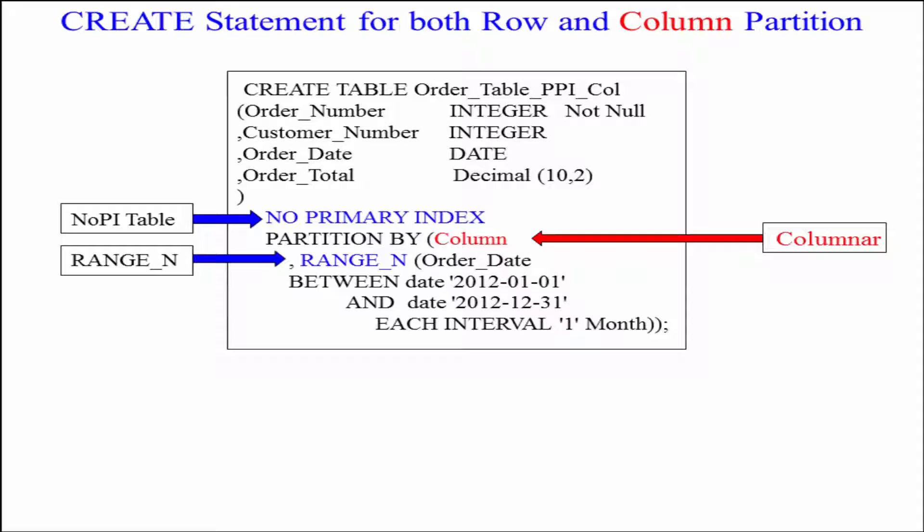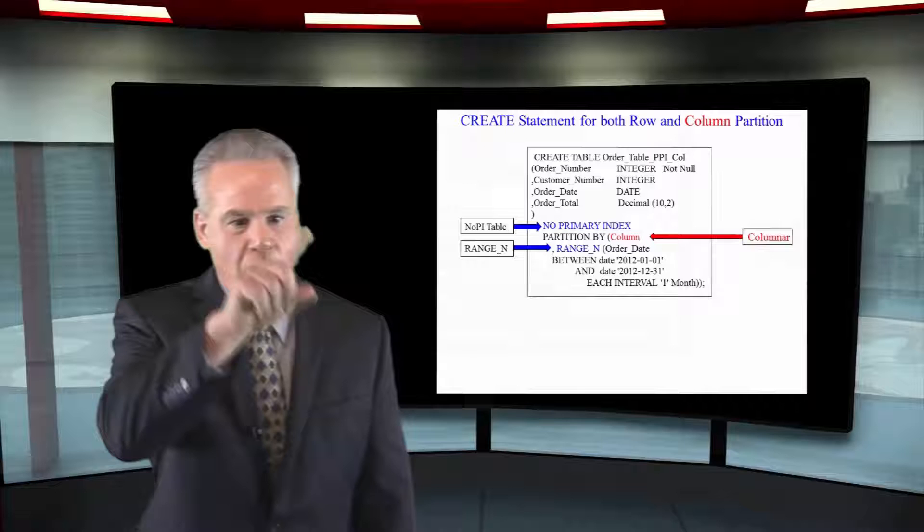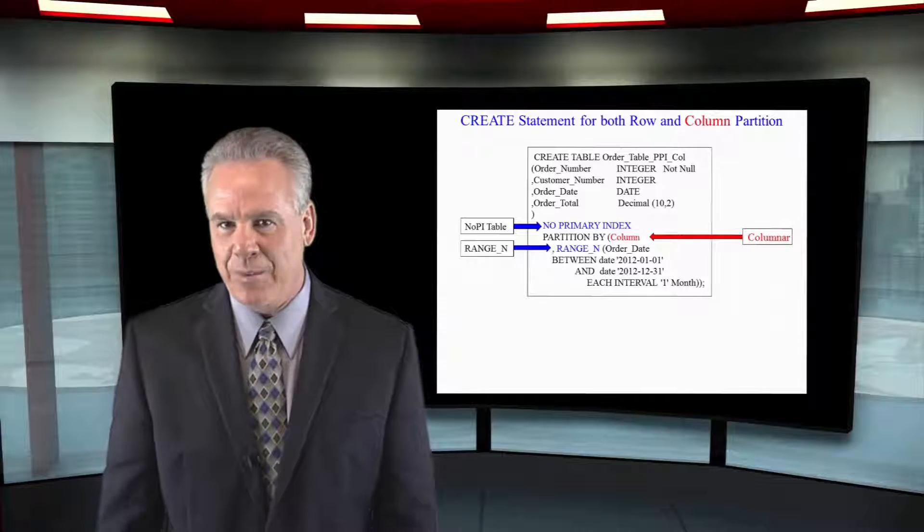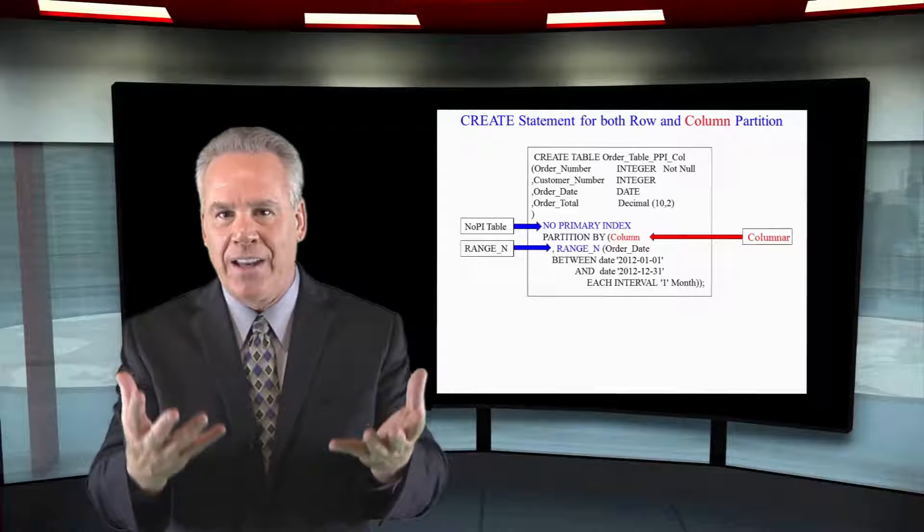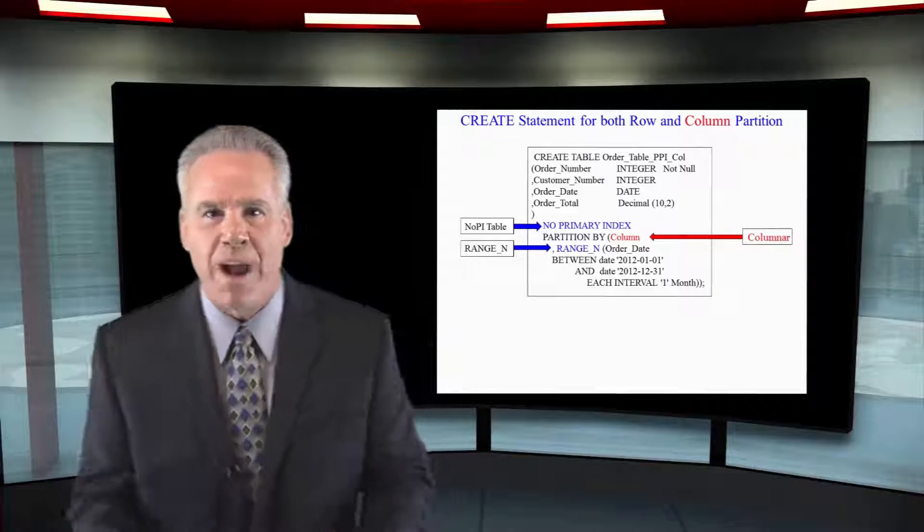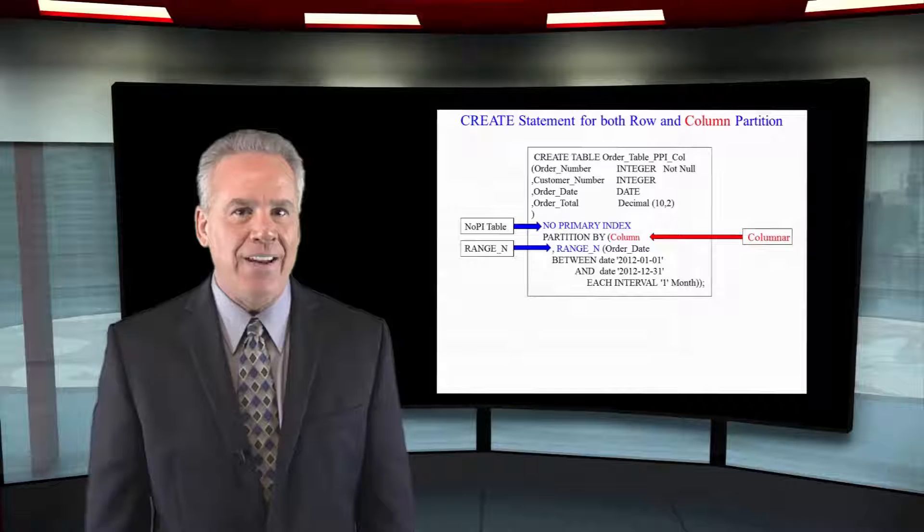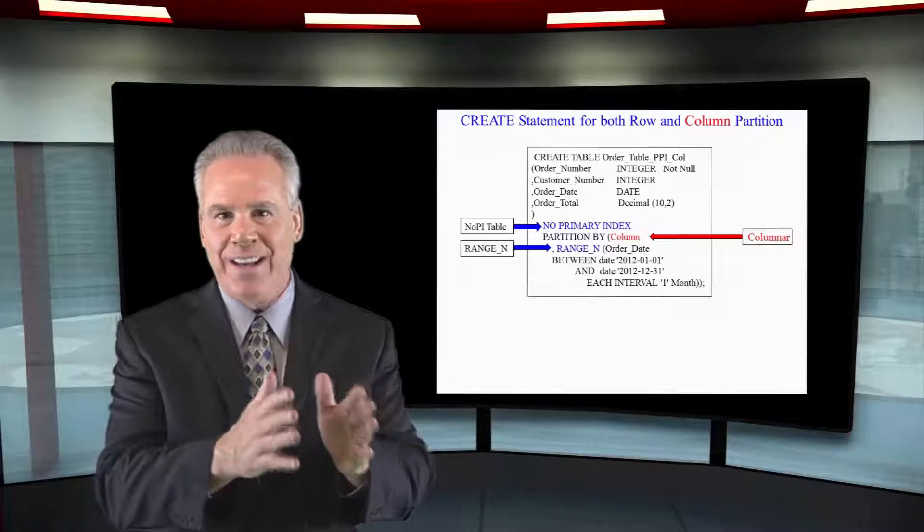We then say no primary index, partitioned by column and there's going to be four column containers here on each one of these amps. But within each column I want you to partition by the month of order date each interval one month. And now you're going to see kind of a dual combination of columnar partitioning and a partition primary index look and feel.